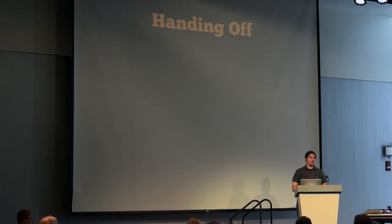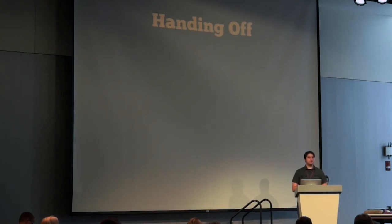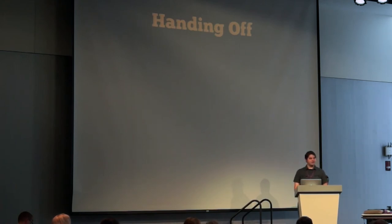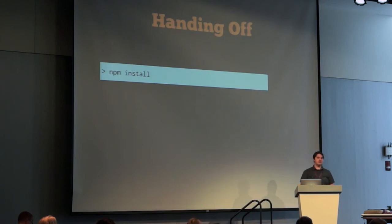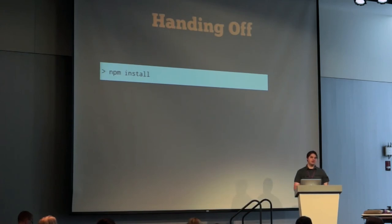So we've now set up our Grunt file with all of those plugins. It might take a while to configure and install all of those, but when another developer comes along, it's super simple to hand off. All you do is give them the files as normal, and in those files you include the package.json and the Grunt file. All they do is go to their command line and type npm install. That looks at your package.json and installs all of the plugins listed there. Then all they do is type grunt, and immediately they're not only up and running, but you know they're running the exact same tools as you and ending up with the exact same product.